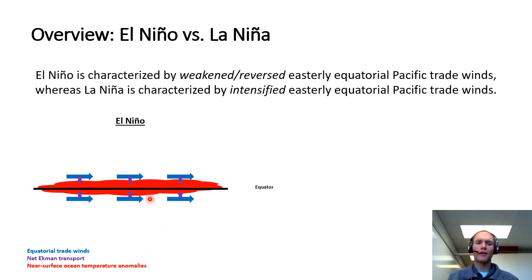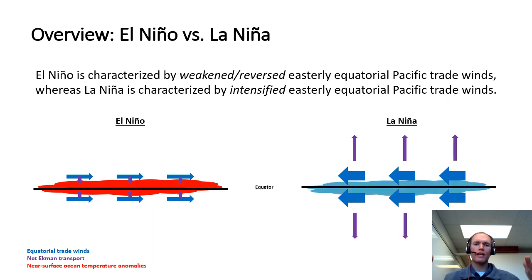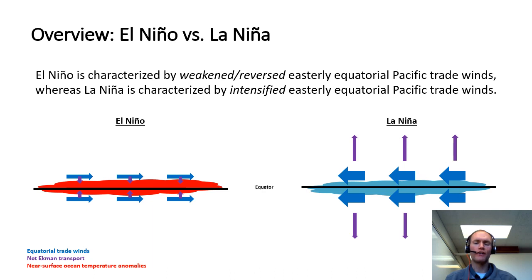La Niña is characterized by intensified easterly equatorial Pacific trade winds, with large Ekman transport directed away from the equator. As a result, you get even more upwelling of cold water from beneath the surface, causing ocean temperatures to be even colder than normal along the equator in the central and eastern equatorial Pacific. These changes in the atmospheric driver feed into changes in the ocean, which then feed back to changes in the atmosphere, and so on.